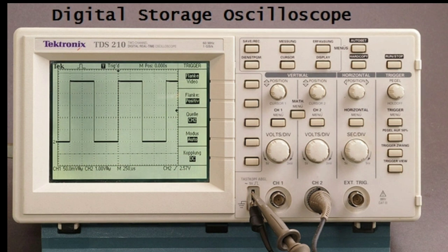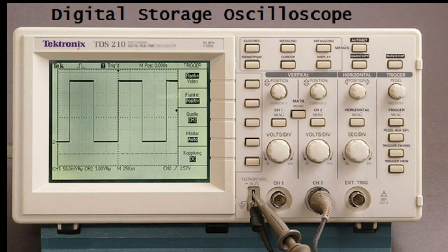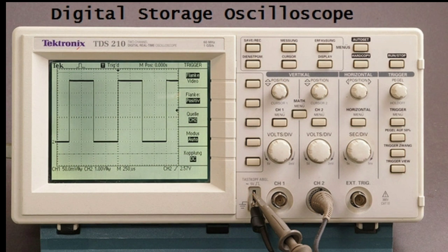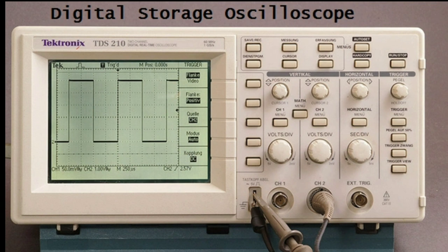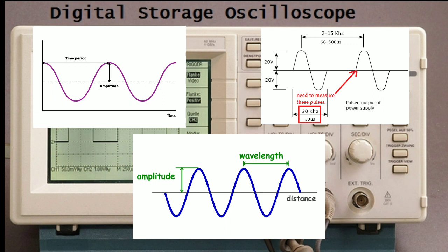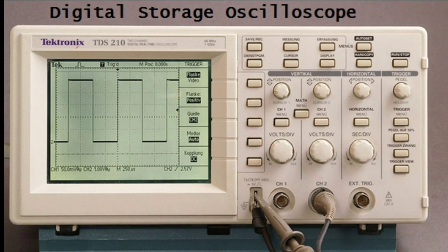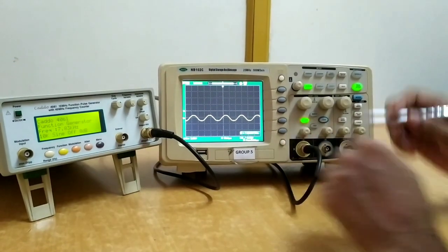The waveforms generated from the function generator are captured by the Digital Storage Oscilloscope, which displays them. It is a display device that shows the waveform generated from the function generator. In this experiment, we are trying to measure the three important characteristics — time period, frequency, and amplitude — with the help of this DSO.